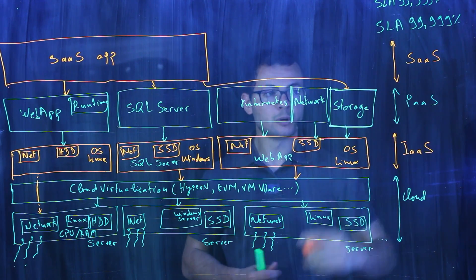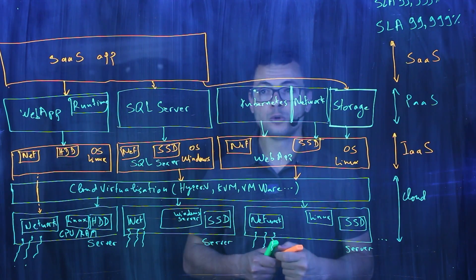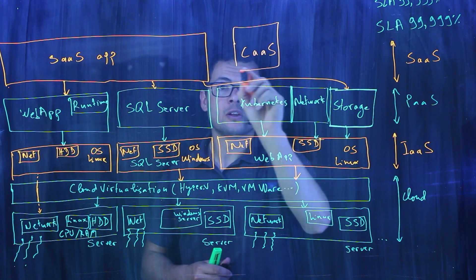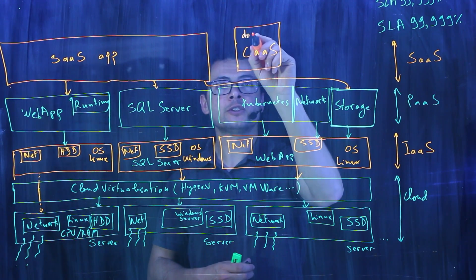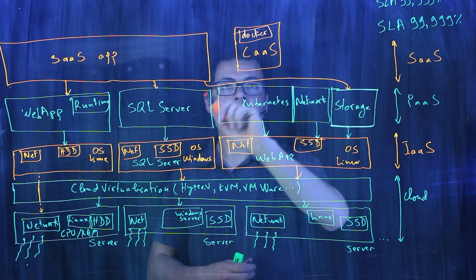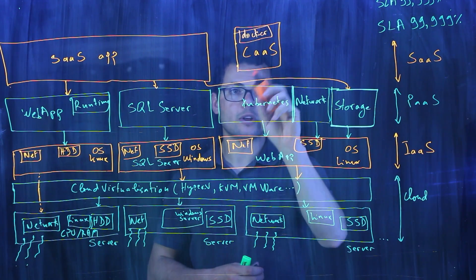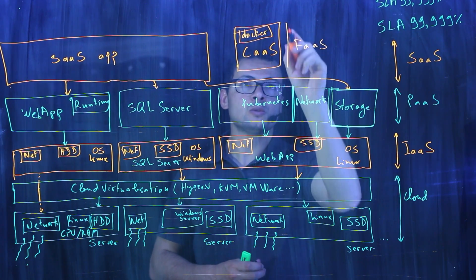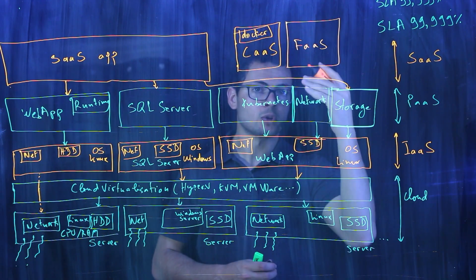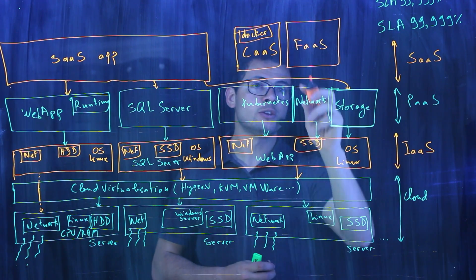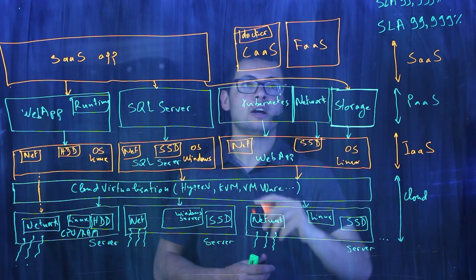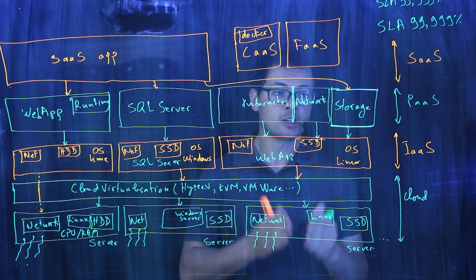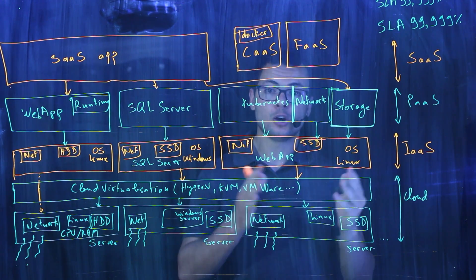With those three different offers, we now also have new offers like container as a service (CaaS), which lets you run Docker containers on the cloud using services like Azure Container Instances. Other services include functions as a service (FaaS), where the cloud provider runs your code and makes sure to scale the service for you. Those are the different cloud offers — thank you.